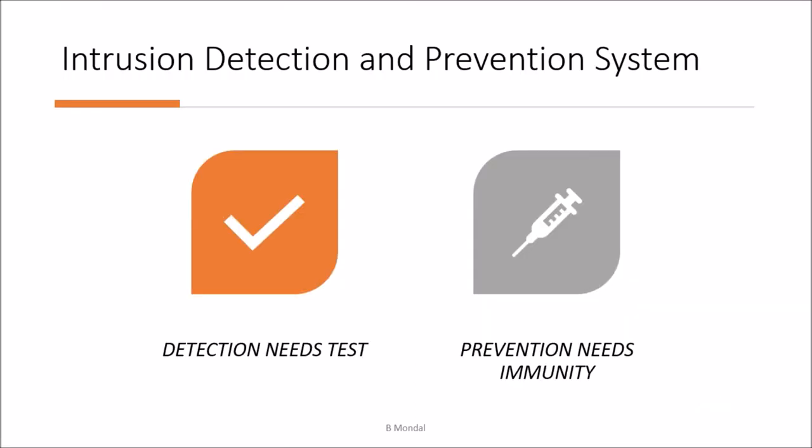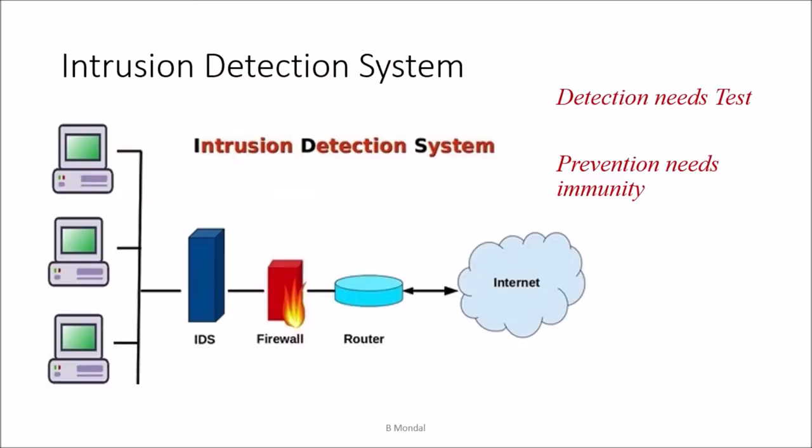For detection, we need to test whether there is illegal or unauthorized activity. For prevention, we need to build immunity — that means we need to strengthen our security configuration.